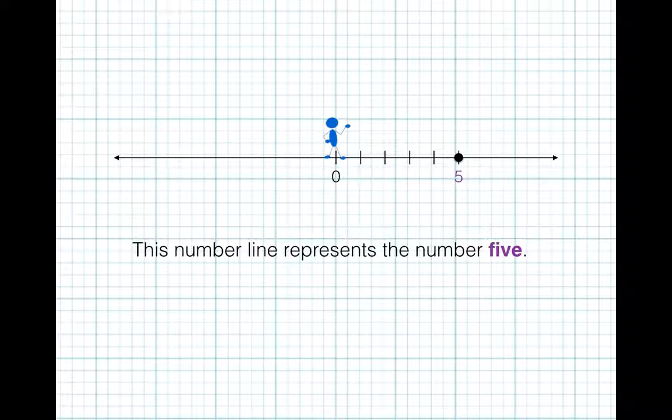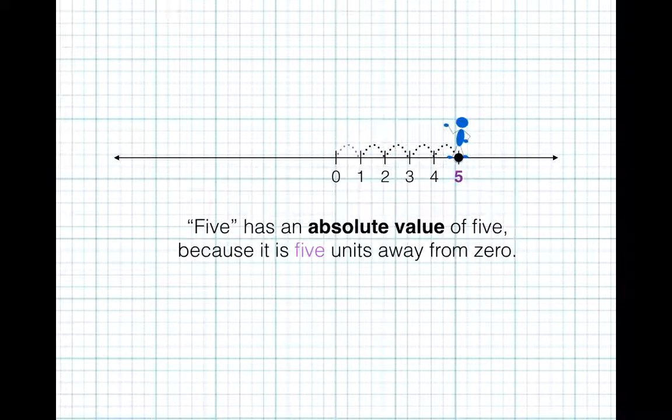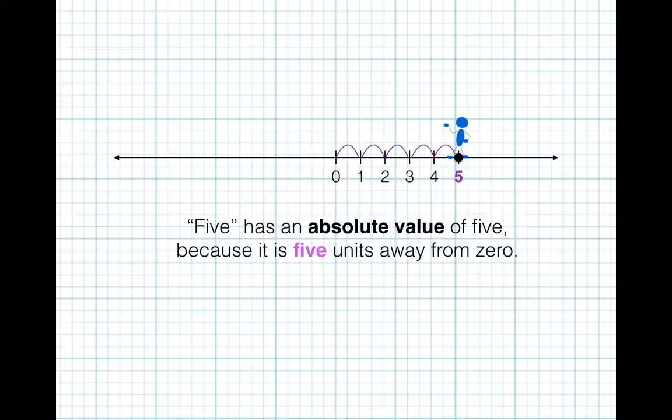This number line represents the number 5. 5 has an absolute value of 5 because it is 1, 2, 3, 4, 5 units away from 0 on a number line.